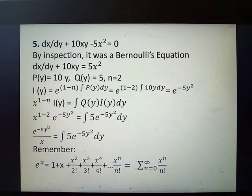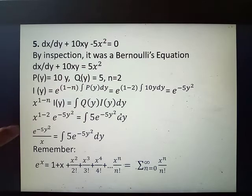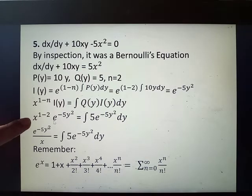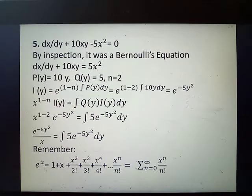Since this is in the form dx over dy plus p of y times x equals q of y times x to the n, the general solution is x to the power of 1 minus n times i of y equals the integral of q of y times i of y dy. Substituting: x to the 1 minus 2 times e to the negative 5y squared equals the integral of 5 times e to the negative 5y squared dy. Since x to the negative 1 equals 1 over x, this becomes e to the negative 5y squared over x equals the integral of 5e to the negative 5y squared dy. This integral is not directly integrable in ordinary terms, so we use a power series.